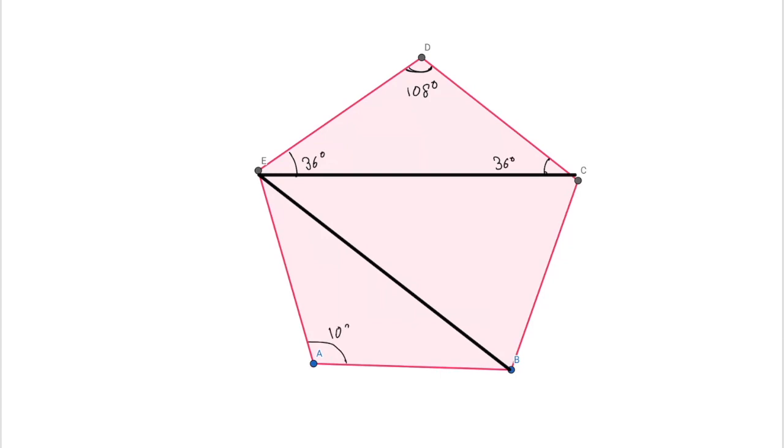At E we have 108 degrees. So we can say this angle is 36 degrees. This angle should also be 36 degrees. At E we have 36 degrees because all angles together make 108 degrees in a pentagon.